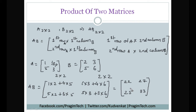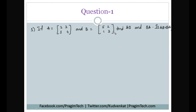Let us solve a question based on the product of matrices. In question number one, we have to find AB and BA and check whether AB equals BA. Both A and B are 2 by 2 matrices, so matrix multiplication is possible. First we will calculate AB.